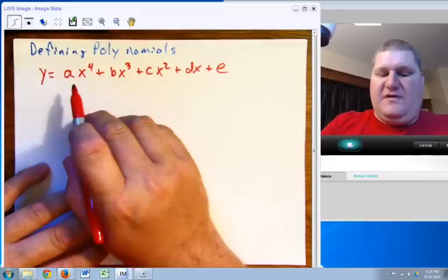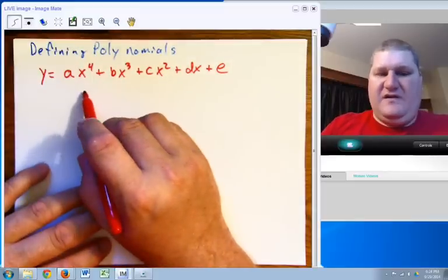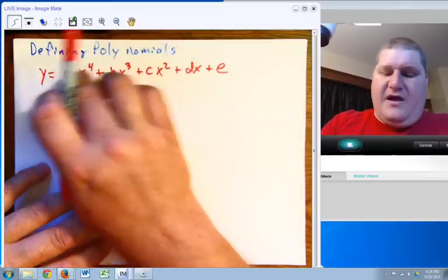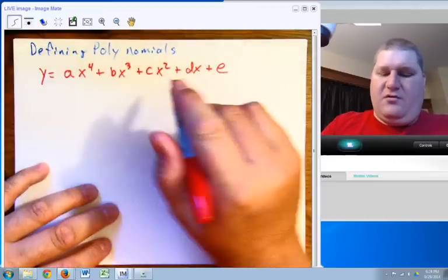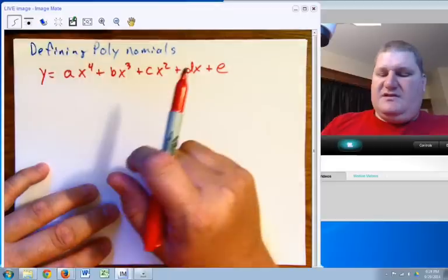So ax to the 4th plus bx cubed plus cx squared plus dx plus e. Now, of course, we're more familiar with ax squared plus bx plus c. But all this is is more power, so therefore it is longer, requiring more letters. And so you simply adjust it.